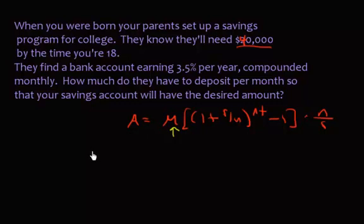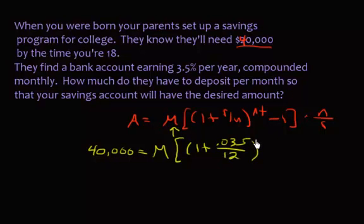We know A because that's our goal amount, the accumulated amount, which is $40,000. We don't know M, but we know everything else. We know the interest rate which is 0.035, divided by 12 because it's a monthly savings, raised to the 12 times 18, minus 1, then times 12 over 0.035.